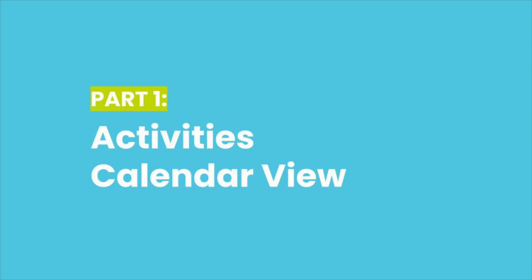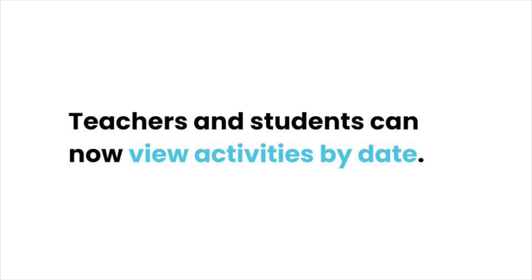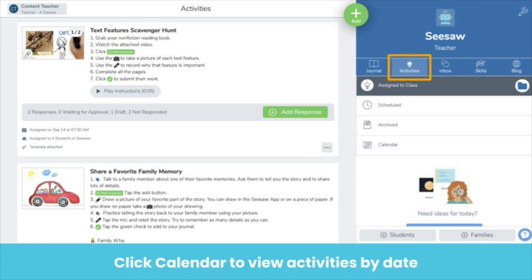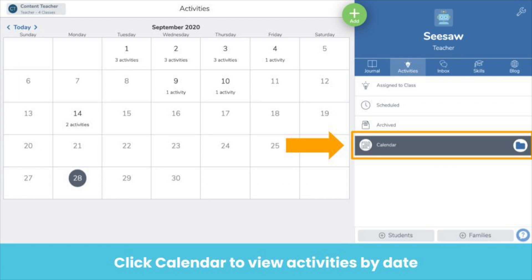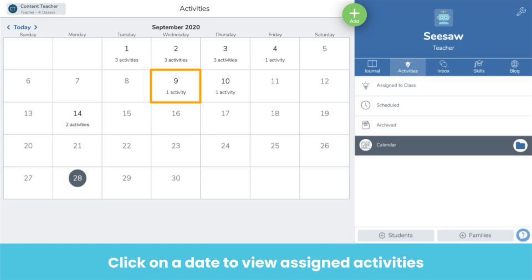You and your students can now view assigned activities in a calendar view. The ability to see assignments laid out on a calendar makes it easy for students to see which assignments they're supposed to complete on any given day — that means less scrolling. In the Activities tab, click on Calendar to see a monthly calendar like this. Each date shows the number of activities assigned on that day. Click on any date to see the activities.